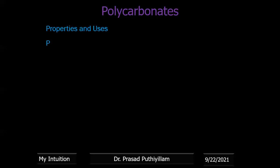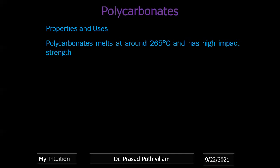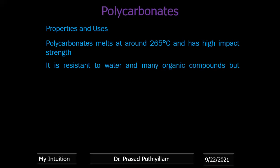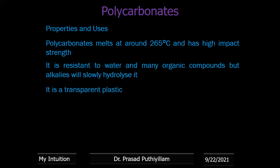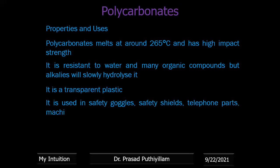Properties and uses of polycarbonate: it melts at around 265°C and has high impact strength. It is resistant to water and many organic compounds, but alkalis will slowly hydrolyze it. It is a transparent plastic used in safety goggles, safety sheets, telephone parts, and machinery housings.